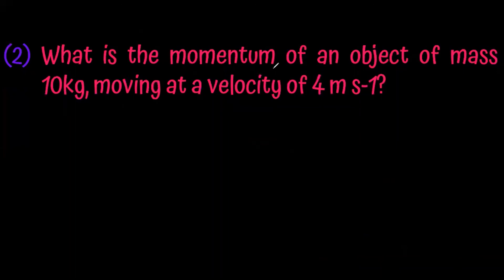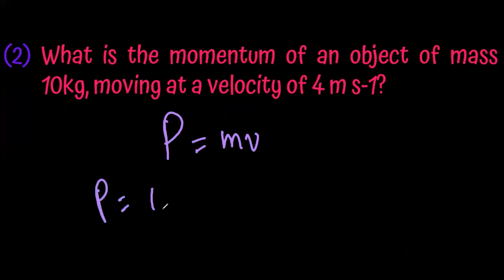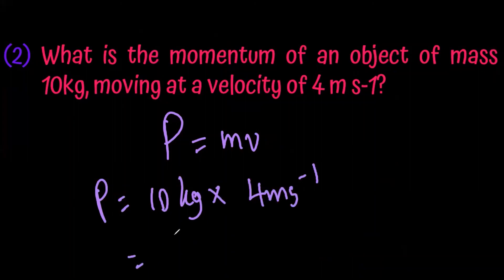What is the momentum of an object of mass 10 kilograms moving at a velocity of 4 meters per second? Using p equals mv: 10 kilograms into 4 meters per second. The final answer is 40 kg·m·s⁻¹.